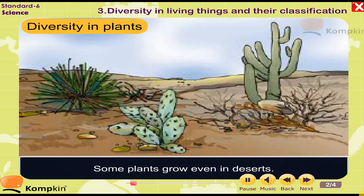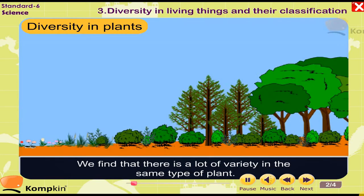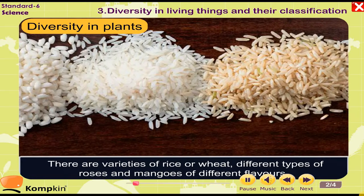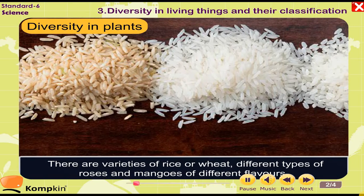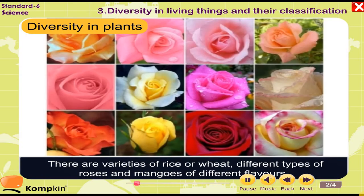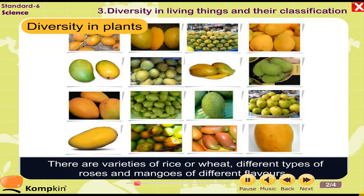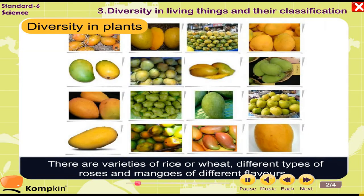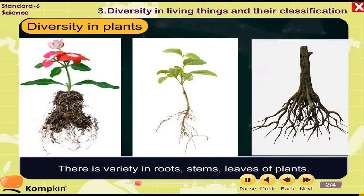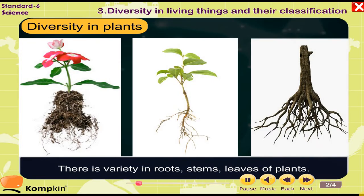Some plants grow even in deserts. We find that there is a lot of variety in the same type of plant. There are varieties of rice or wheat, different types of roses, and mangoes of different flavors. There is variety in roots, stems, and leaves of plants.